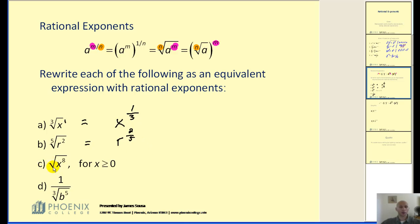Now on letter c, notice there's no index. I want to have an index so I can apply this definition. And since it's a square root, of course, we know that it's going to be an index of two. Therefore, this would be x to the power of eight-halves, which of course simplifies to x to the fourth power.